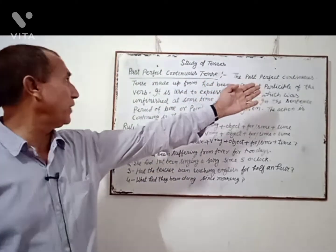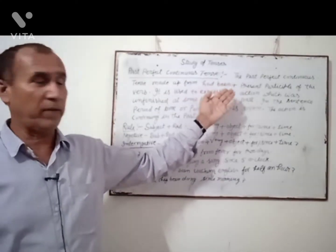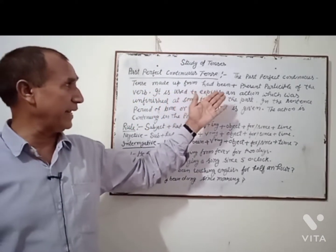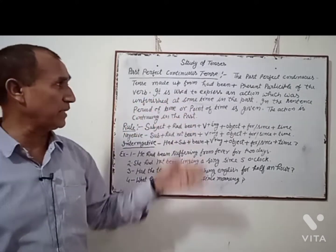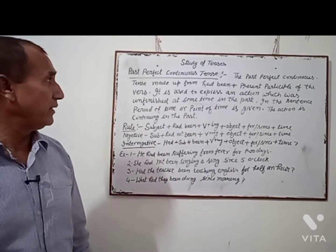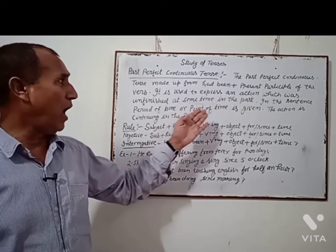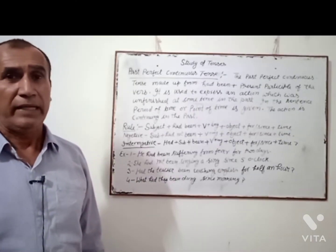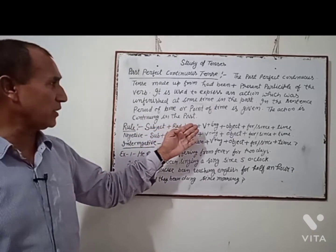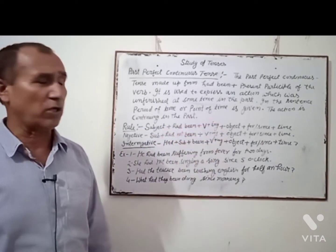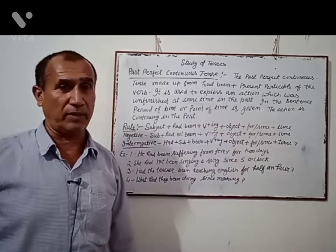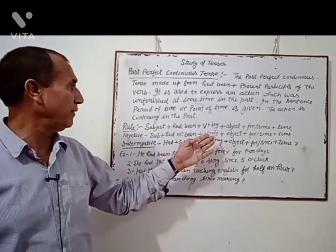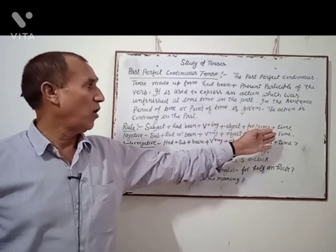Its rule is: subject plus had been plus V-ing plus object plus for or since plus time. For the negative sentence: subject plus had not been plus V-ing plus object plus for or since plus time.